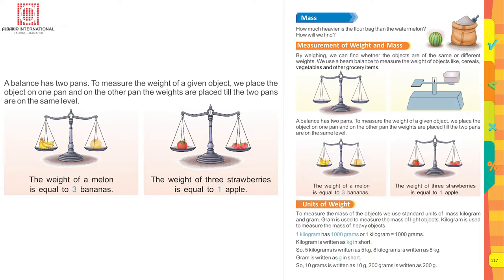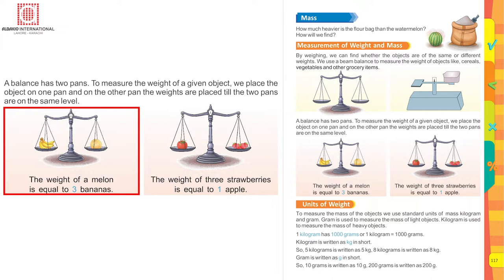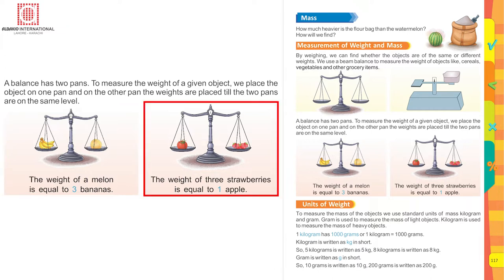On the other pan, weights are placed until the two pans are at the same level. For example, the weight of a melon is equal to three bananas, and the weight of three strawberries is equal to one apple.